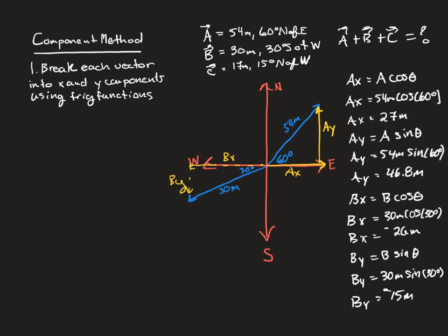This is also a good time to double-check that your calculator is in degrees and not radians, especially if you just bought a new calculator. Calculator default modes are radians, but at the beginning of the semester we're working in degrees, so make sure you're in degree mode. Now we need to do our last vector, vector C, which is 15 degrees north of west.